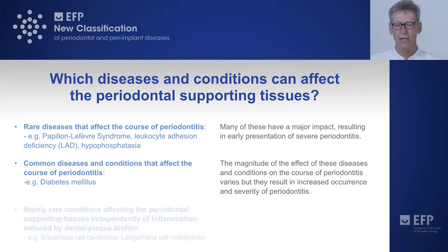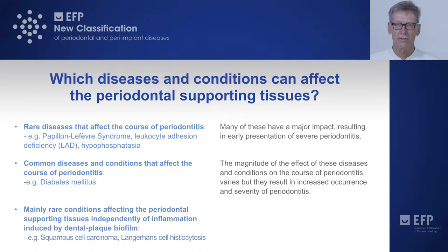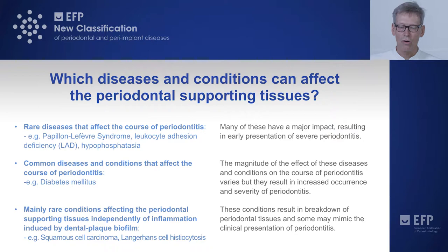And finally, there are again many rare conditions that also have an effect, but independent of inflammation induced by the dental plaque biofilm. Examples for this third group are cancer like squamous carcinoma, Langerhans cell histiocytosis, and a few others. They result in breakdown of periodontal tissues, and some may even mimic the clinical presentation of periodontitis.